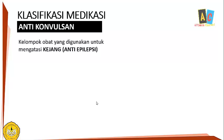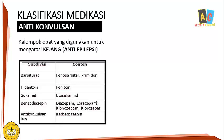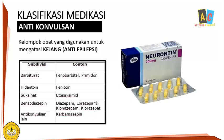Kemudian anti-konvulsan, merupakan kelompok obat yang digunakan untuk mengatasi kejang, biasanya digunakan oleh orang-orang yang mengalami kejang epilepsi, sehingga dikenal dengan anti-epilepsi. Contoh obat anti-kejang: subdivisi barbiturat misalkan fenobarbital, primidon; golongan hidantoin ada fenitoin; suksinimid ada etosuksimid; yang terkenal ada diazepam, lorazepam, klorazepat; dan karbamazepin. Salah satu contoh obat antikonvulsan adalah Neurontin, nama generiknya gabapentin.